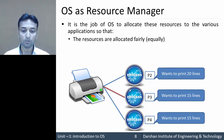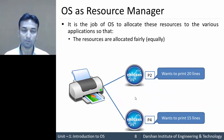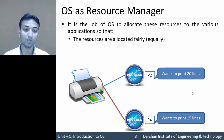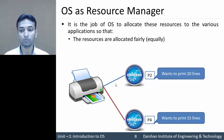Once P3 completes, the printer becomes free and is allocated to P4. After P4 completes, process P5 arrives requiring 10 lines and gets the printer. Meanwhile P2 has been continuously waiting and never gets the printer to print its 20 lines. This is unfair, and this type of unfairness should not exist in resource allocation — all resources must be fairly allocated to each and every process.